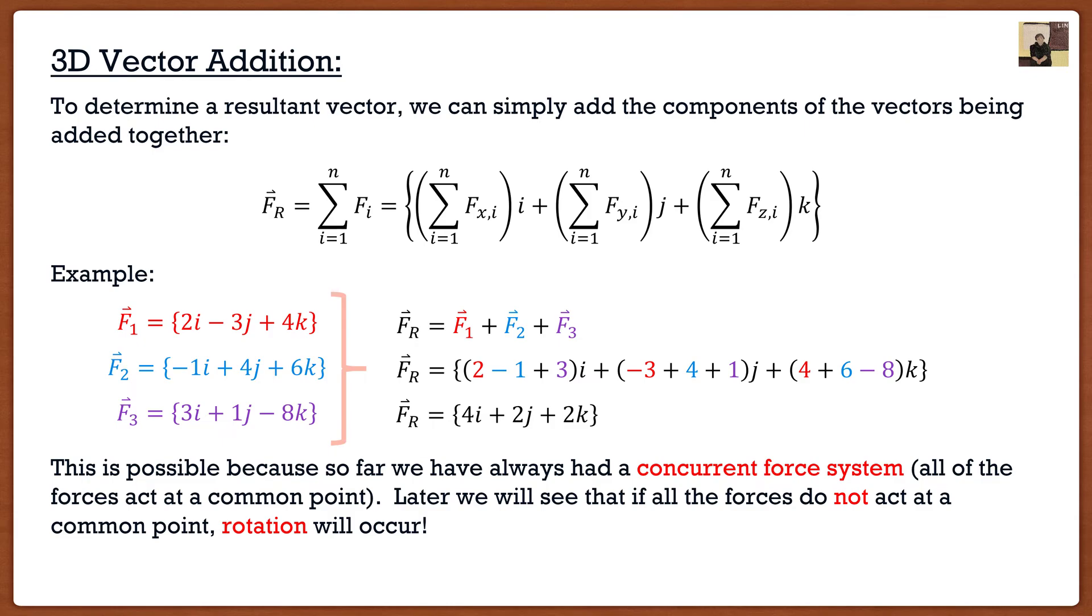Thus far we've always just said that if we want a resultant vector just add everything together and you're good to go, and that's true because up until this point we've dealt with something called concurrent systems and next week we're still going to be dealing with them so it's okay. Concurrent systems are when all these forces act at the same point and this allows for all of that simplicity. This allows us to take all of our forces and add them together.